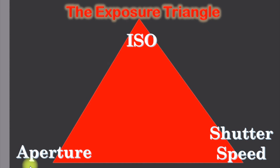Each of these components of exposure has an effect on the type of picture that you take. For example, if you use a fast shutter speed, you can freeze action. And if you use a slow shutter speed, you're likely to get some blur if you take pictures of a moving object.